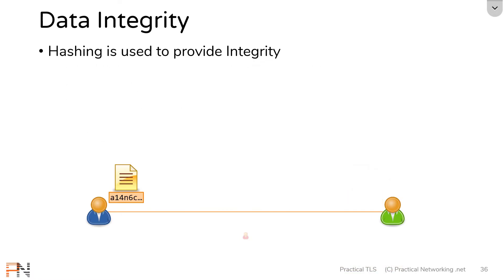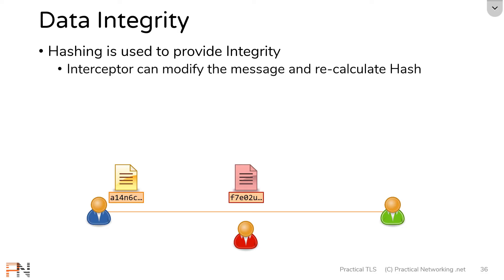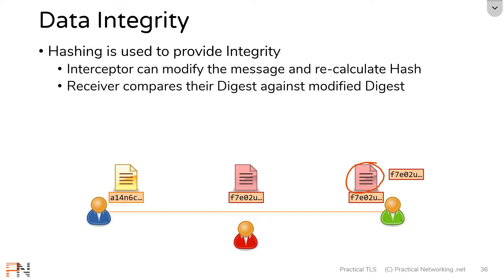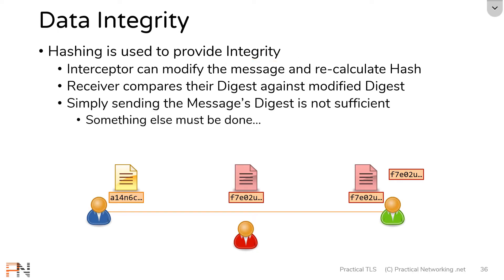Hopefully you've come to realize that the problem with this implementation is that if there is someone in the middle listening on the wire and that someone intercepted the message, they could change the message and recalculate the digest, then send that along on the wire. On the receiving side, the receiver is calculating a digest from the changed message and comparing it to the modified digest. So the receiver isn't going to know it's accepting a modified message. That defeats integrity entirely. Simply hashing the message is not enough — we have to do something else.